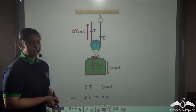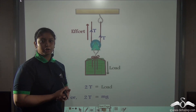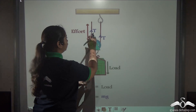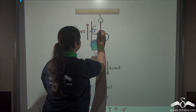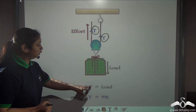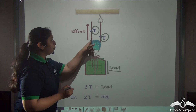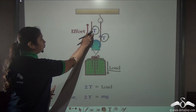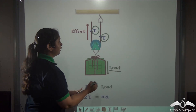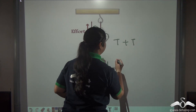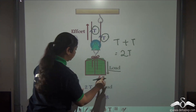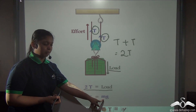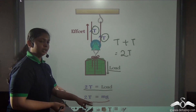As learned in a previous lecture, tension acts on the string in order to balance the load and the effort. In this kind of pulley system, the two segments of a rope experience tension denoted by t. The load is balanced by both tensions on the two string segments, so load equals t + t, which is 2t, or equivalently mg = 2t.